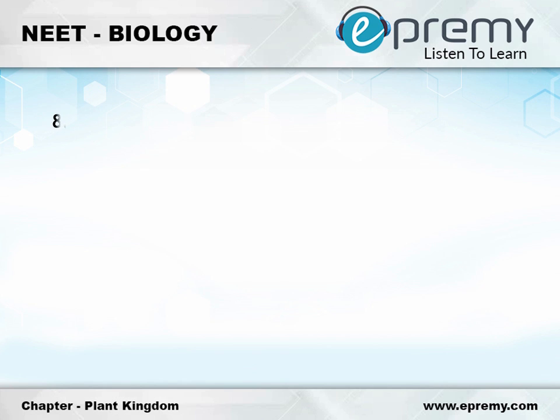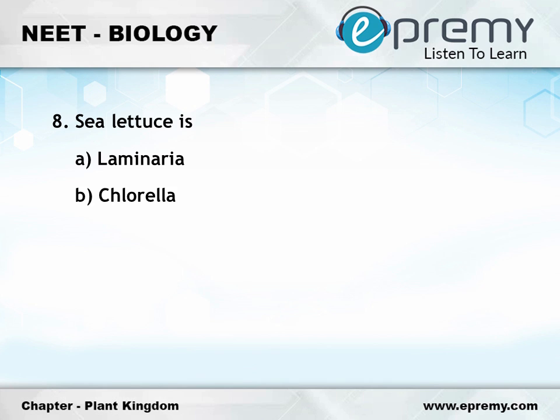Question number eight: sea lettuce is option A Laminaria, option B Chlorella, option C Sargassum, option D Ulva. The answer is option D Ulva.